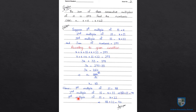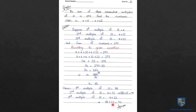Third multiple of 11 = x plus 22 = 88 plus 22 = 110।